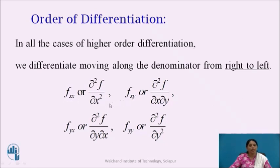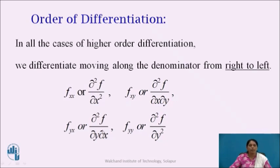we move from right to left, so the first differentiation is with respect to x, then again with respect to x. Similarly, when finding f subscript xy or ∂²f/∂x∂y, we move from right to left — on the right we have ∂y, so the first differentiation is with respect to y and then with respect to x. Similarly, for ∂²f/∂y∂x, the first differentiation is with respect to x and then with respect to y.